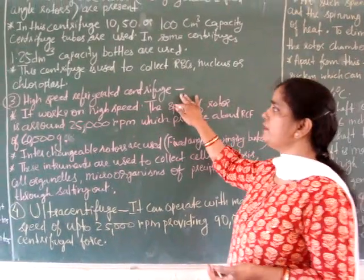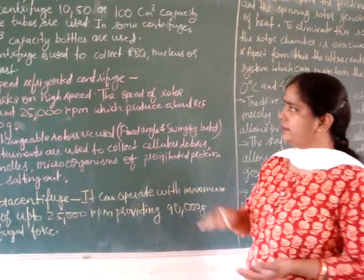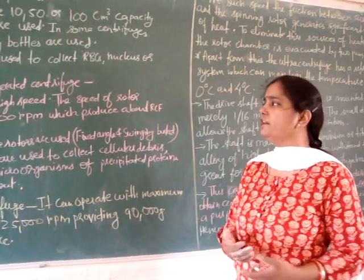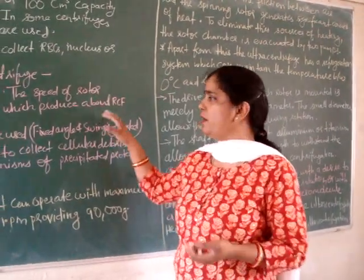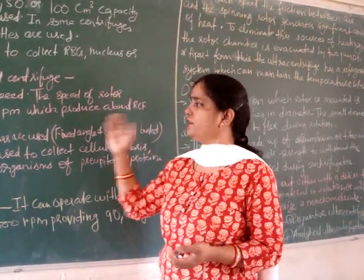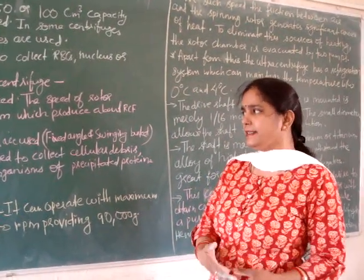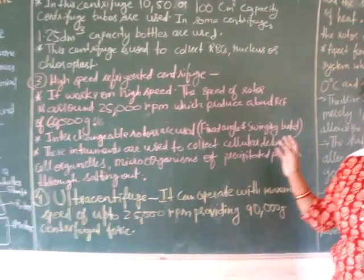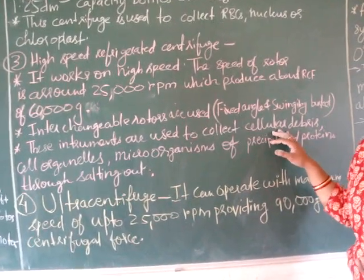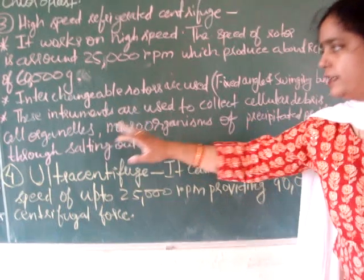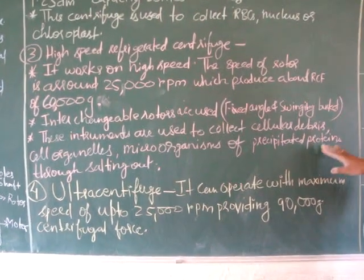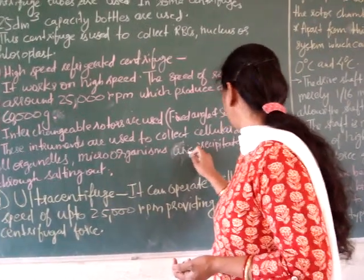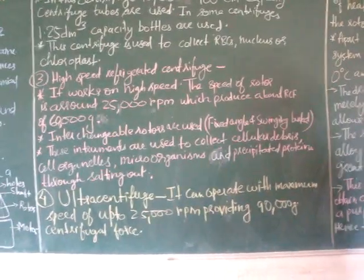The third type is the high speed refrigerated centrifuge. This centrifuge works at high speed — the speed of the rotor is around 25,000 RPM, which produces a relative centrifugal force (RCF) of about 60,000 G. Interchangeable rotors are used, including fixed angle and swinging bucket rotors. These instruments are used to collect cellular debris, cell organelles, microorganisms, and precipitated proteins through salting out processes.